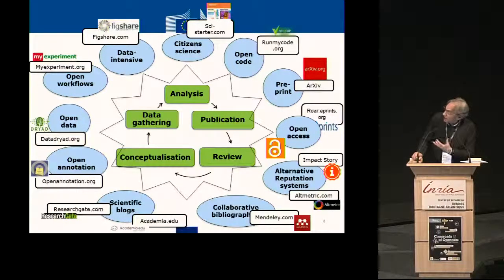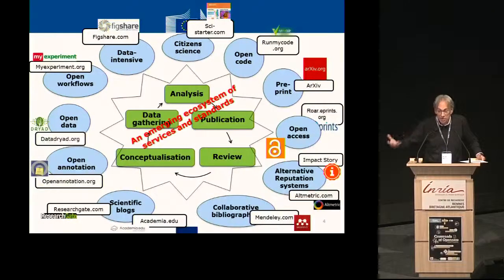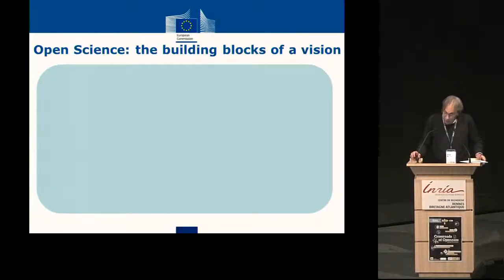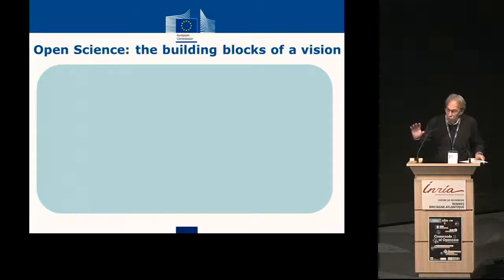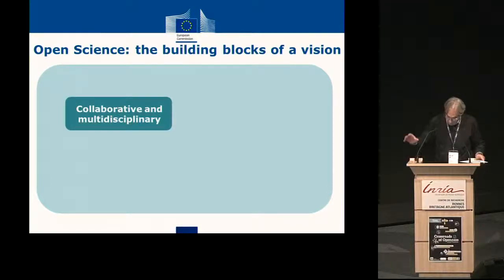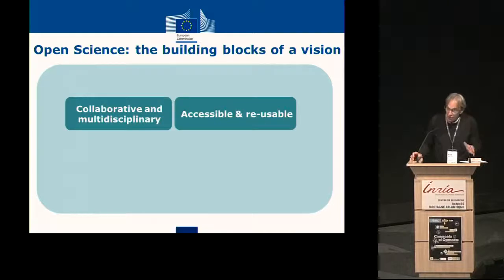Our vision tries to put a bit of structure on this. It's probably a simplified vision, but it has several dimensions. The first dimension is what do we mean by open? If we think of open science, the principles will be multidisciplinarity and collaboration between scientists. On the other side, we have a building block of accessibility and reusability, which is our open access policy.